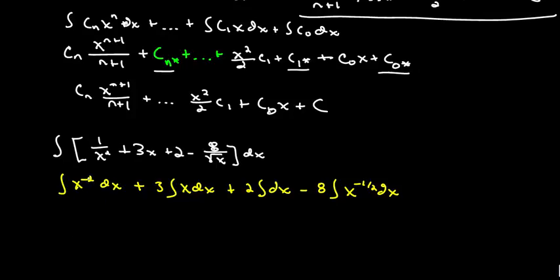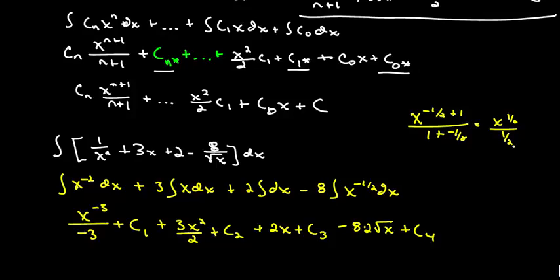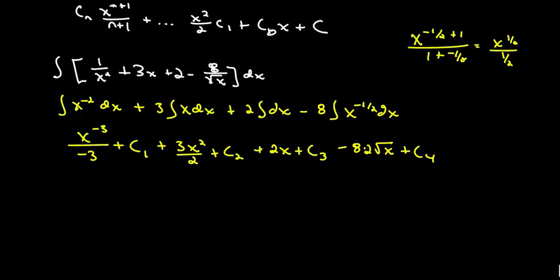Now we apply the power rule by adding one to the exponent and dividing. The first term gives x to the negative one over negative one. The second term gives 3 times x squared over 2. The third term gives 2x. For the last term, x to the negative one half plus one over one plus negative one half gives x to the one half over one half, which is 2 times x to the one half, so 2 square roots of x. That works out nicely.